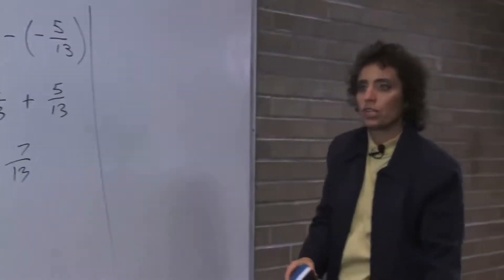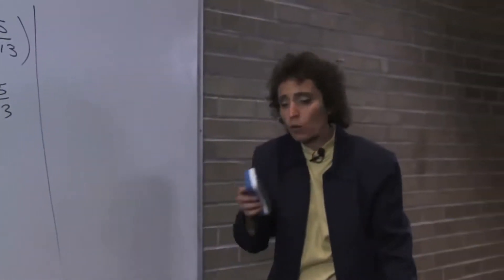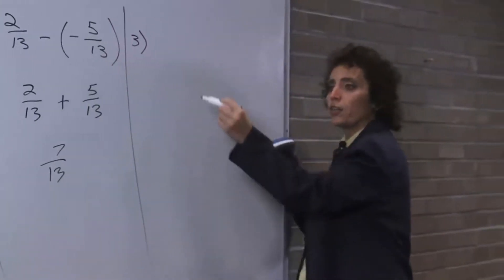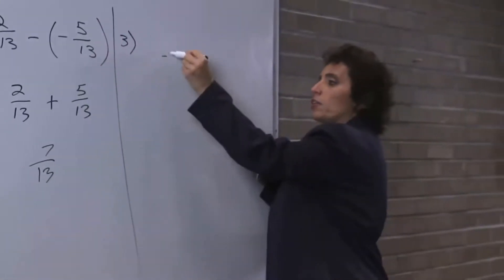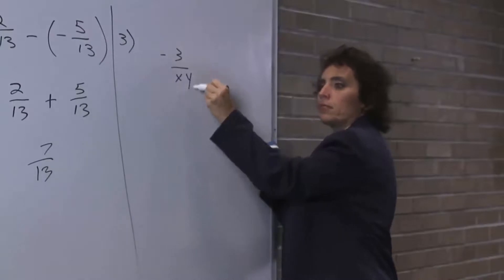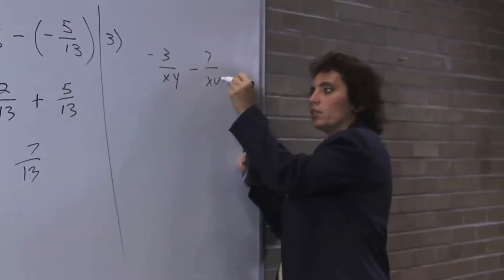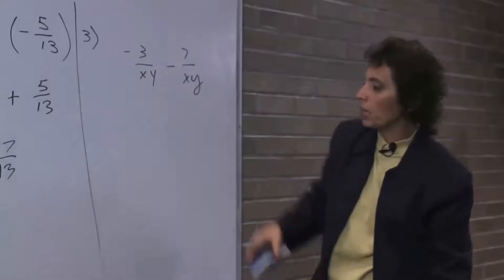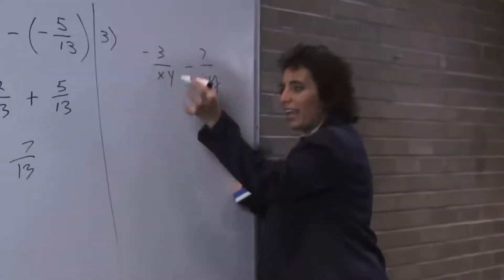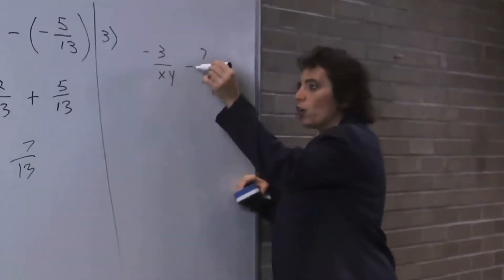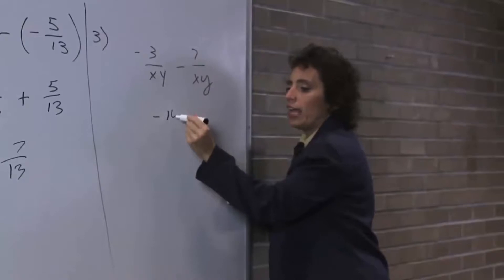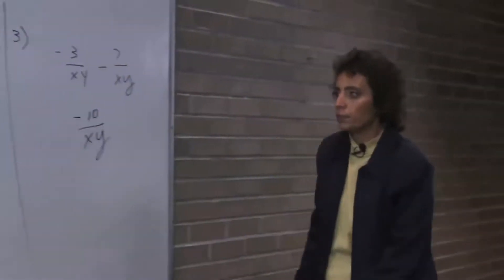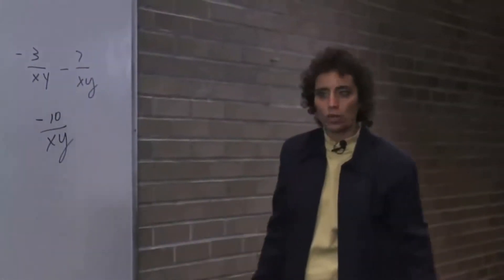Remember, the denominator stays the same. Think about why — when you do these problems, don't just do them arbitrarily. Think about why you're getting those denominators. Think of the minus sign always being with the top number. So I owe you 3xy, I owe you 7, so now I owe you 10xy on the bottom. Negative 10 over xy.